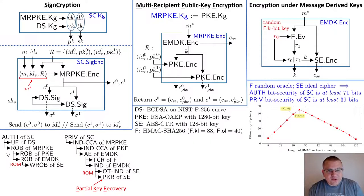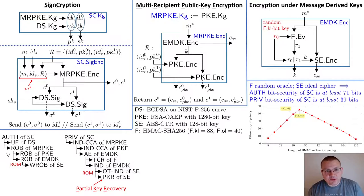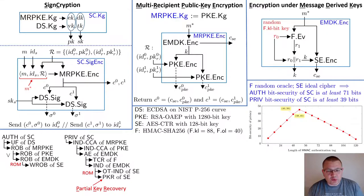We obtained a sequence of security reductions, each proven in the concrete setting. In the paper, we instantiated this sequence of proofs with the specific real-world primitives used in iMessage, allowing us to deduce a lower bound for the concrete security of iMessage. As a result, we claim that the iMessage design provides at least 71 bits of security with respect to authenticity and at least 39 bits of security with respect to privacy.